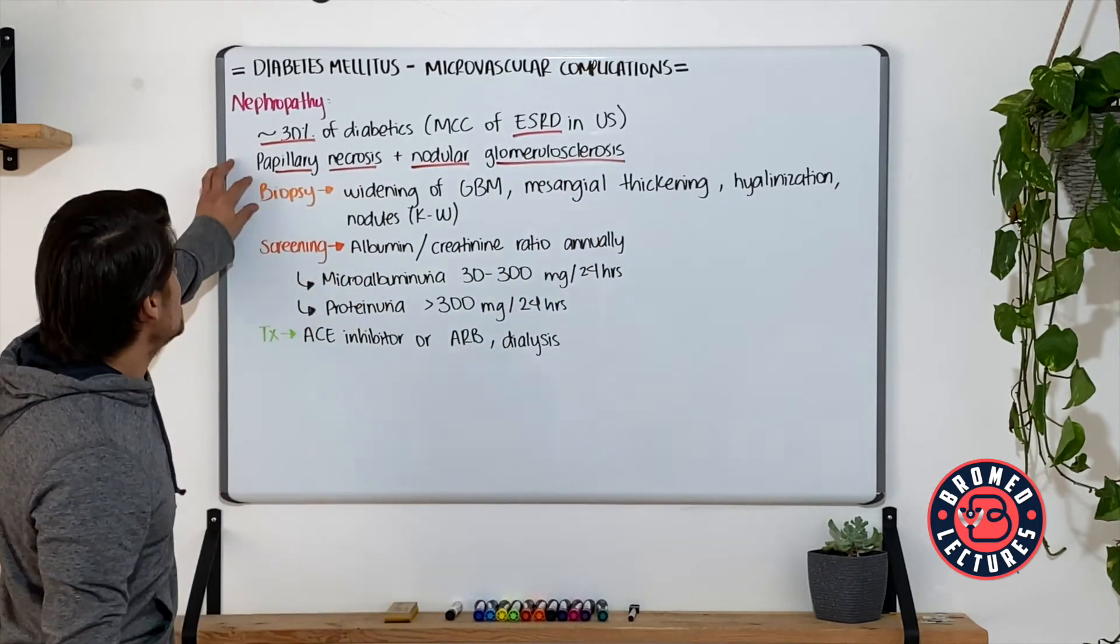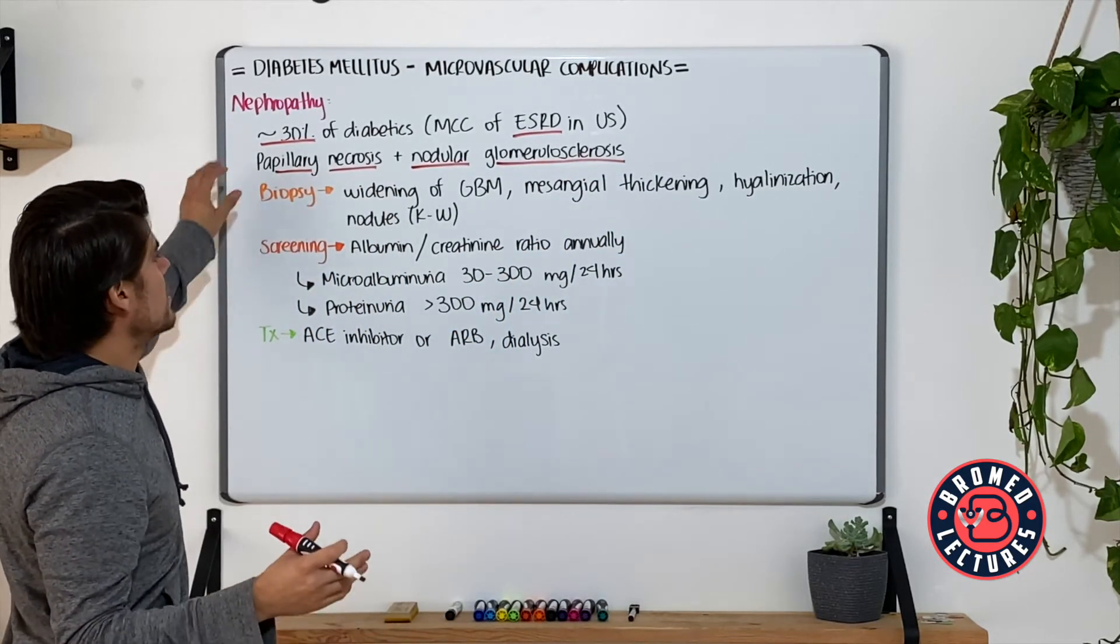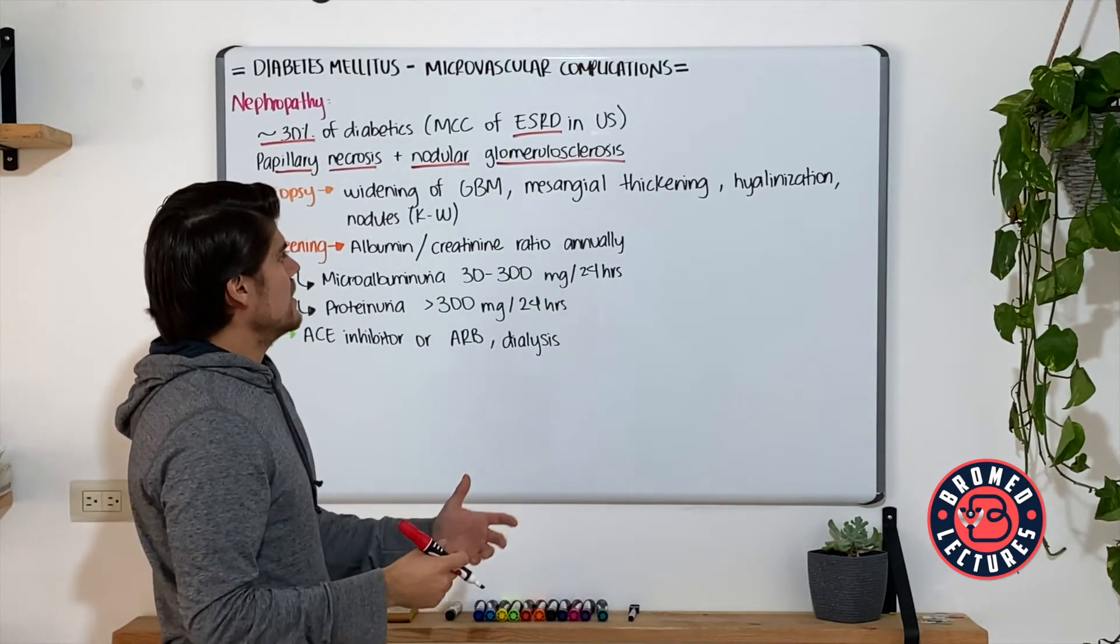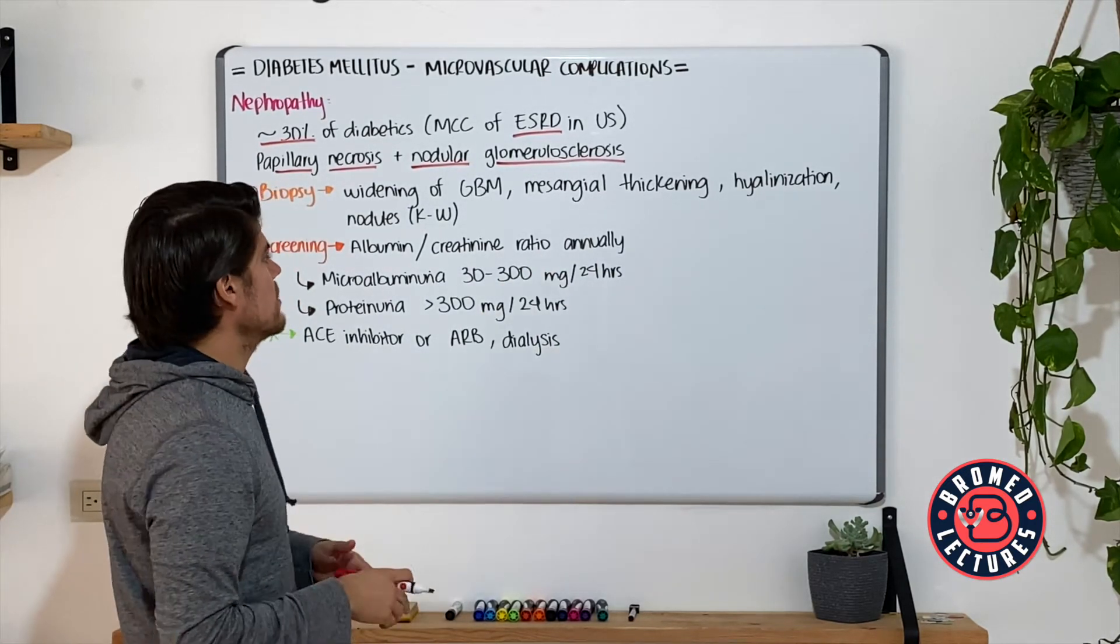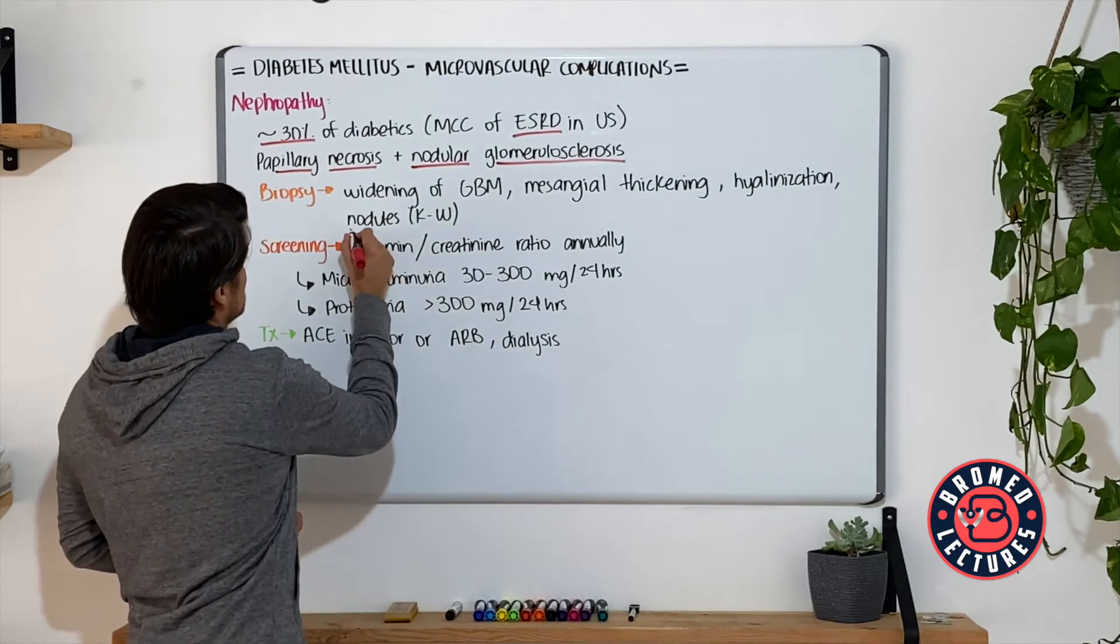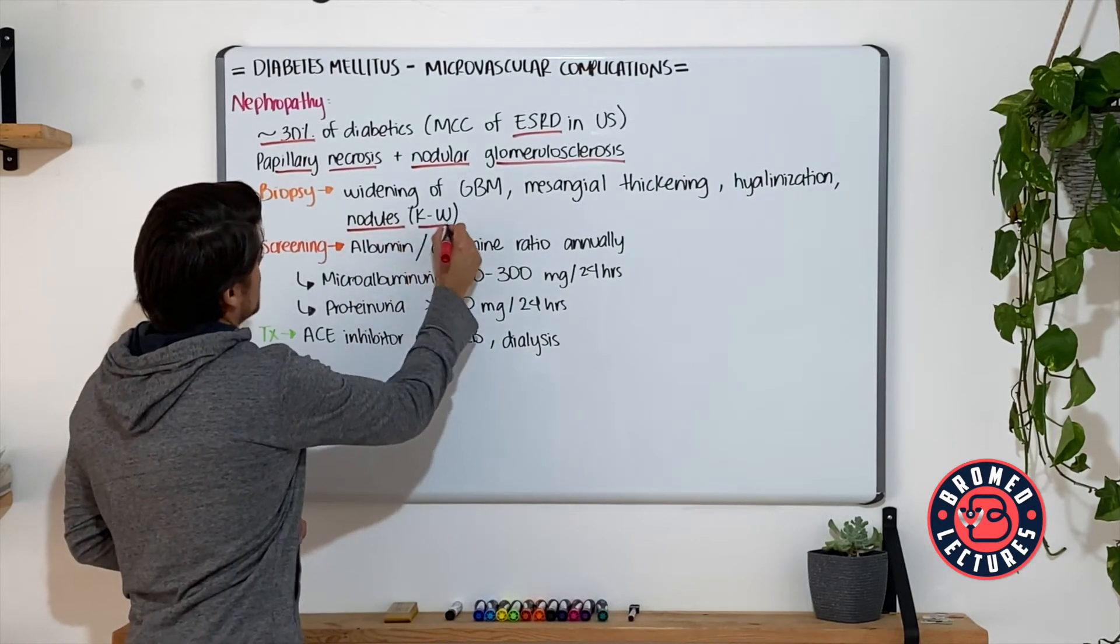At the biopsy, we're going to see widening of the glomerular basement membrane, mesangial thickening, hyalinization of the vasculature, and what is pathognomonic is the nodules of Kimmelstiel-Wilson.